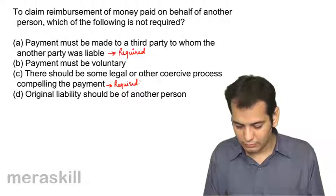Karthik is a coach of Sachin, a minor who joined for hockey coaching. The fees is Rs. 10,000. The contract is: A) void agreement, B) contingent contract, C) quasi contract, D) wagering agreement. This question belongs to the topic of capacity to contract where you are contracting with a minor. All contracts with a minor are void agreements. The answer is A.